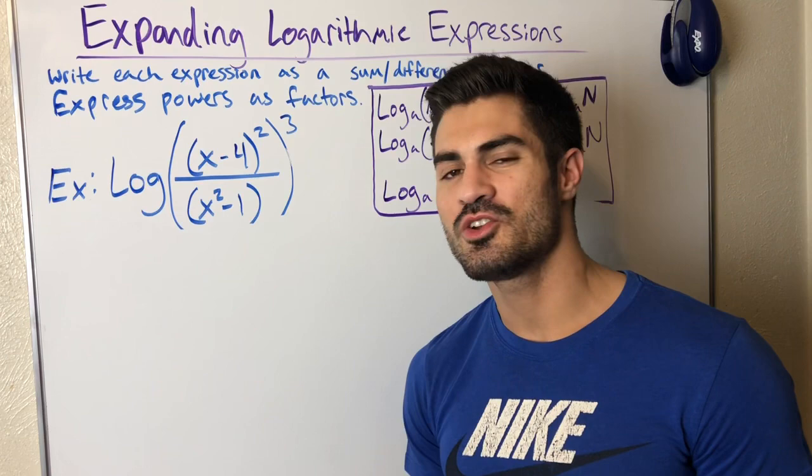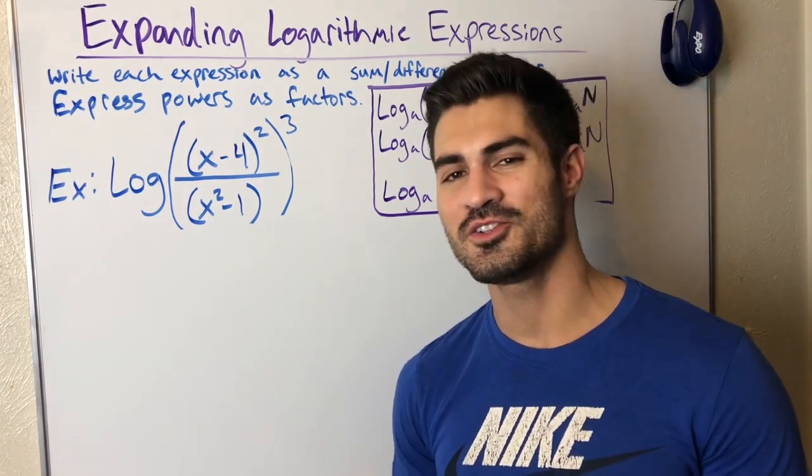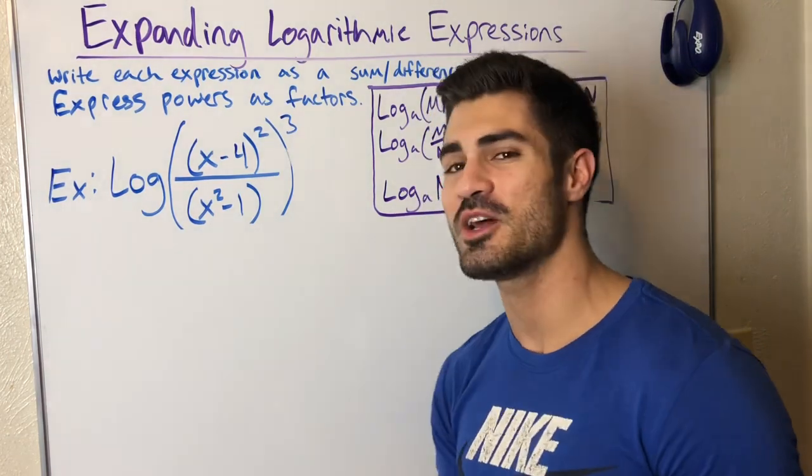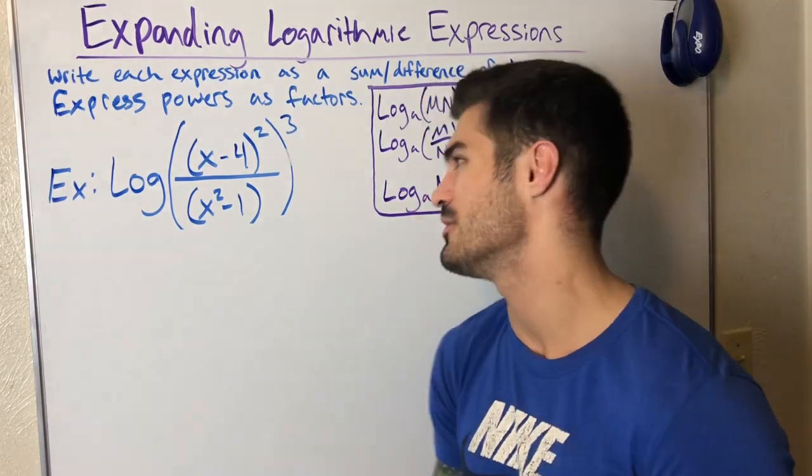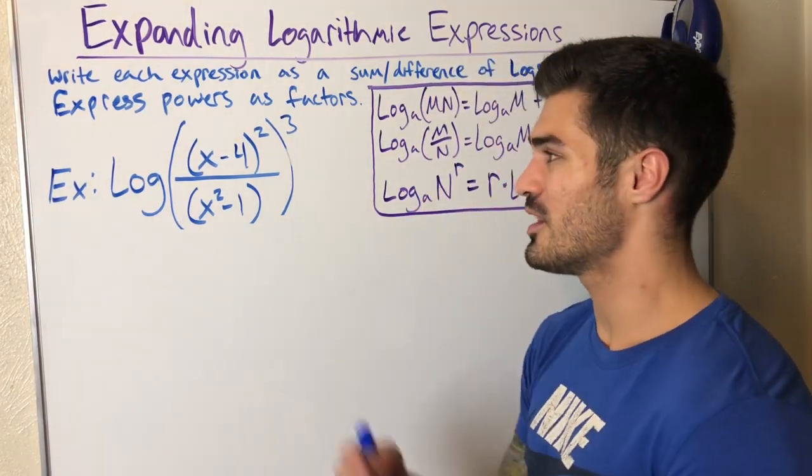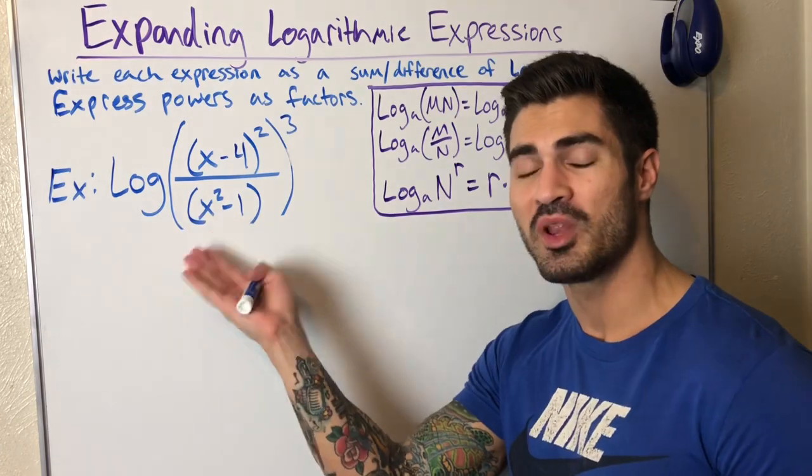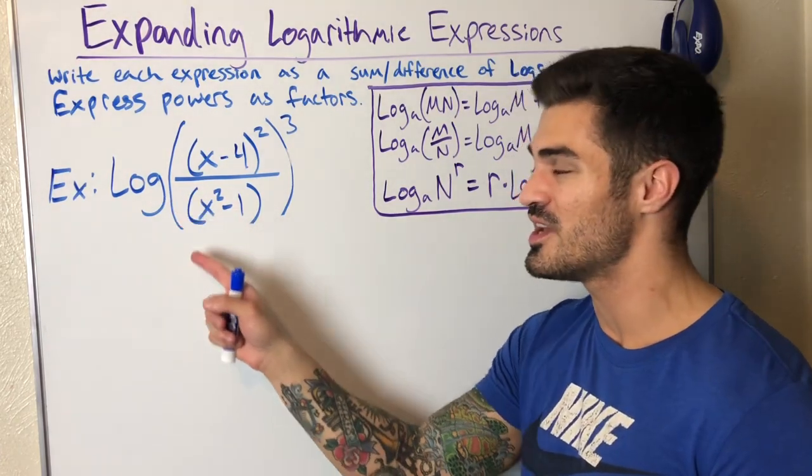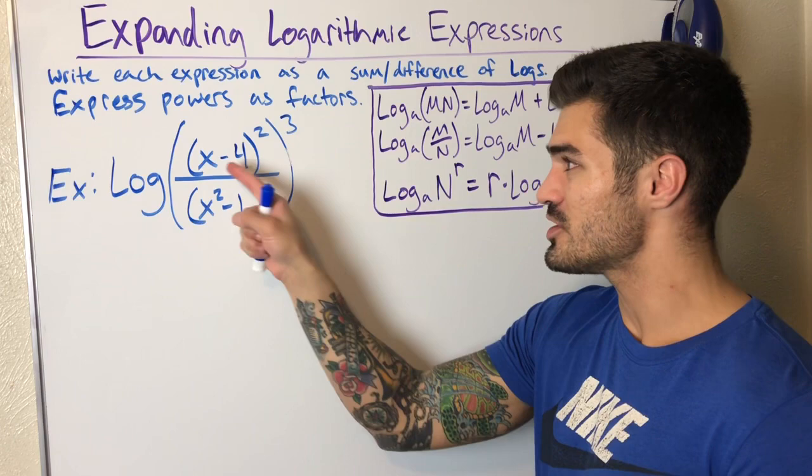Alright, this is our last example. Let's just go ahead and jump right into a doozy. I encourage you to pause the video and try this on your own. This is about as tough as these get. So if you can do this then you're probably good to go from here. So I'll go ahead and start. I have log. There's no base so that's an implied 10. There's basically an invisible 10. So log base 10 of all this stuff.